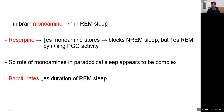Decrease in brain monoamine concentration increases REM sleep. Reserpine, which decreases or causes depletion of monoamine stores, blocks NREM sleep but at the same time increases REM sleep. Because it blocks NREM sleep while increasing REM sleep, the role of monoamines in paradoxical sleep appears complex. Barbiturates decrease the duration of REM sleep.